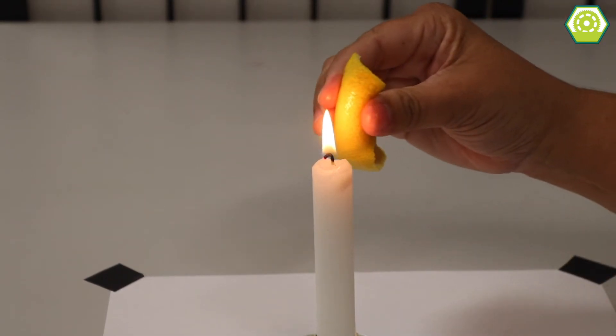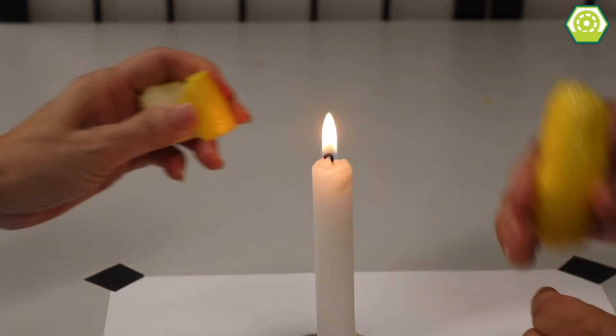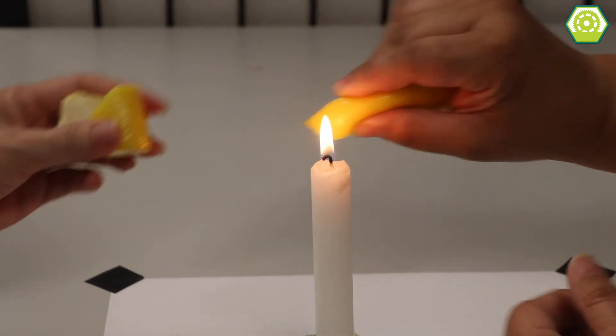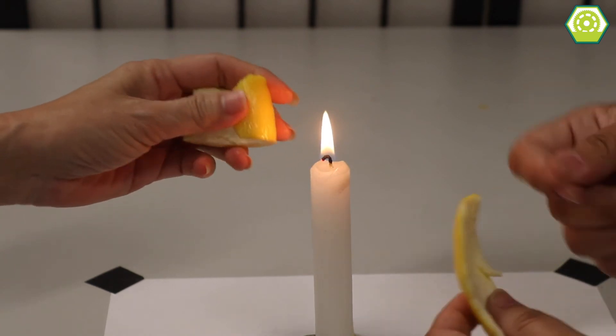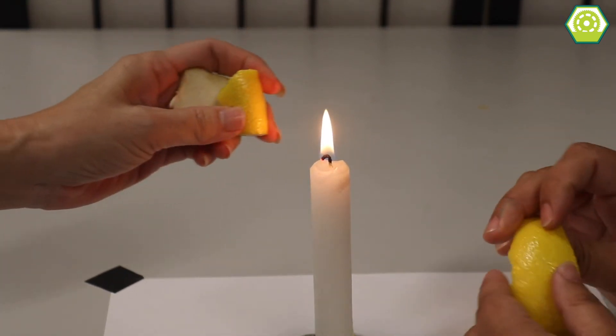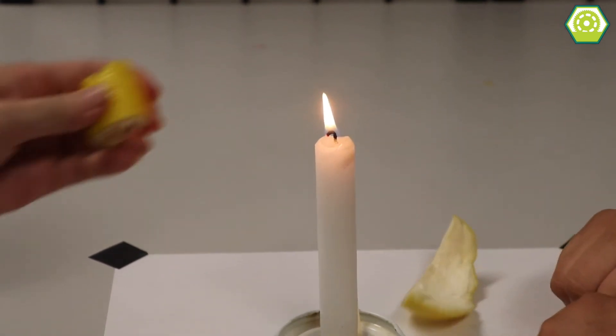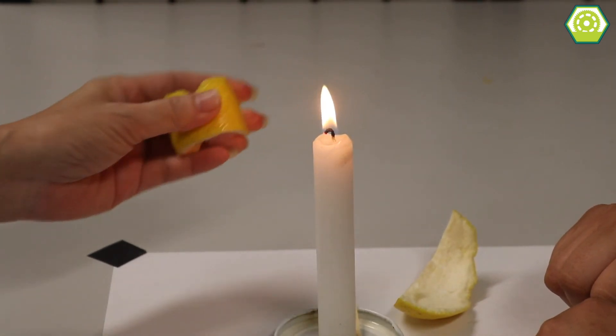I'm going to try to fold it sideways too. Yeah. No. There we go. So you can also do this with orange peels. This peel is a little thick, so it's hard to really squeeze it and get that citrus juice to squirt out of the peel. But that is how you boost a candle flame using lemon peel.